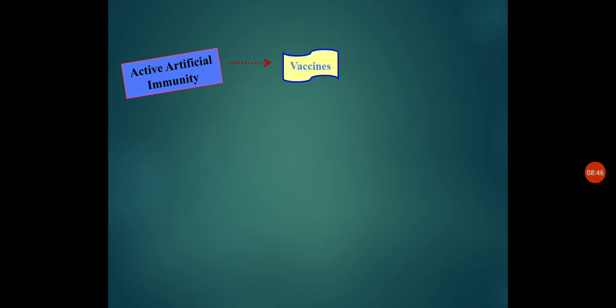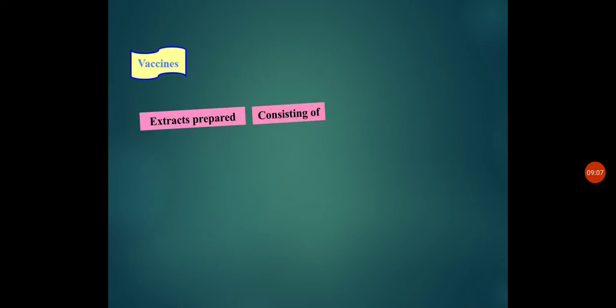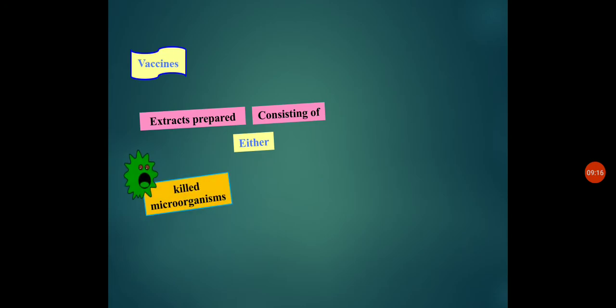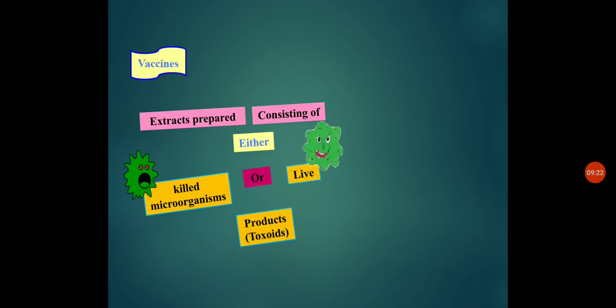Vaccination is a concept derived from the cow — in the Latin word, 'vaca' means cow, so it is known as vaccine. These vaccines are extracts prepared consisting of either killed microorganisms or live microorganisms, and sometimes products of toxins as well. So what is the main purpose of the vaccine?